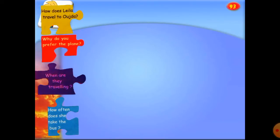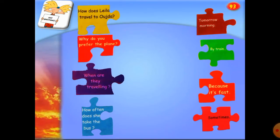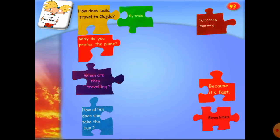On page 93 we have a matching exercise. Question number one: how does Leila travel to Oujda? On the right side we have the answers. By train — Leila travels to Oujda by train.